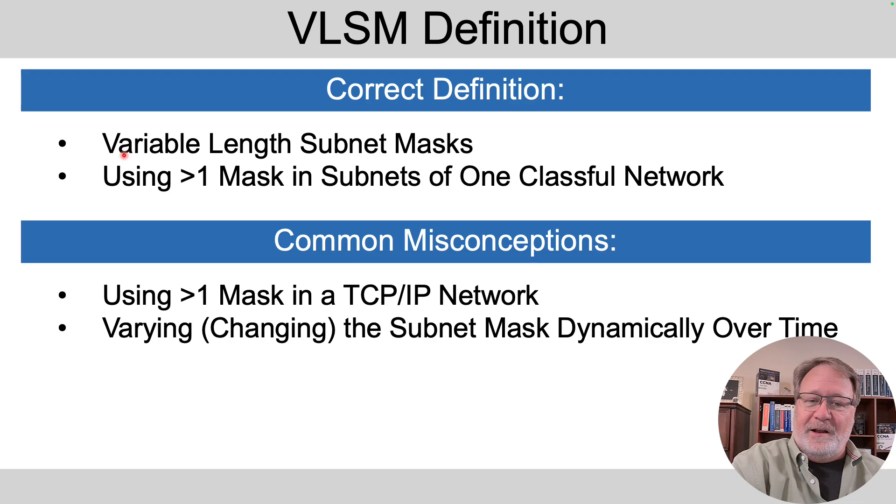It's not some way for the mask to change somehow. All it is: I'm creating subnets. Do I pick one mask only or do I use multiple different masks? If I use multiple inside the same classful network, it's VLSM.